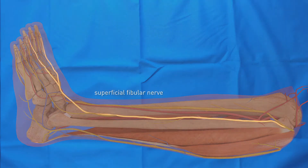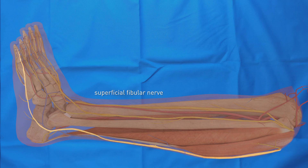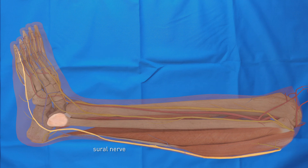The superficial fibular nerve is both a sensory and motor nerve. It runs anterior to the distal fibula. The sural nerve is a sensory nerve that, along with the small saphenous vein, runs posteriorly around the lateral malleolus. Due to its location, this nerve is vulnerable when performing surgery on the lateral side of the ankle.